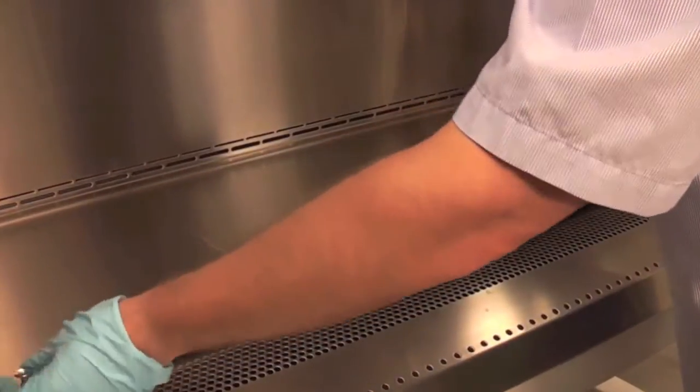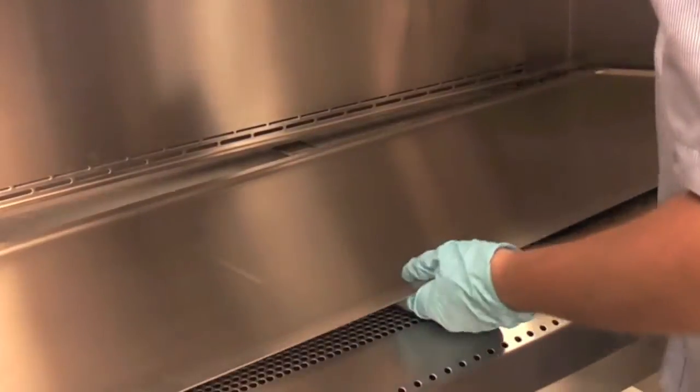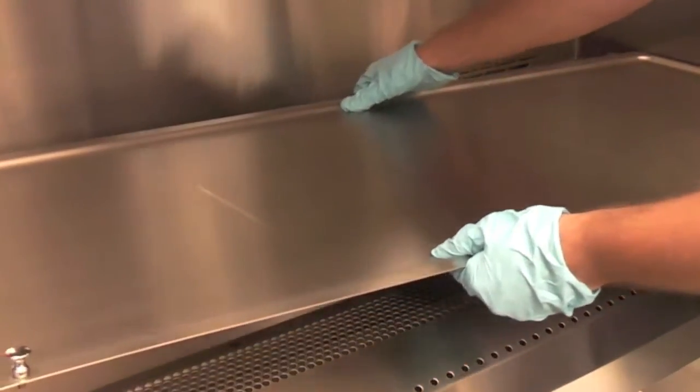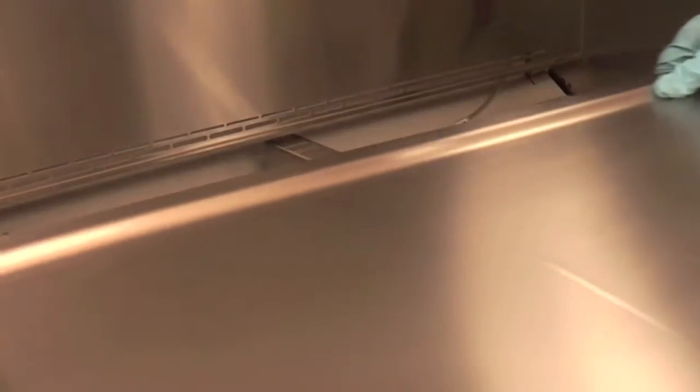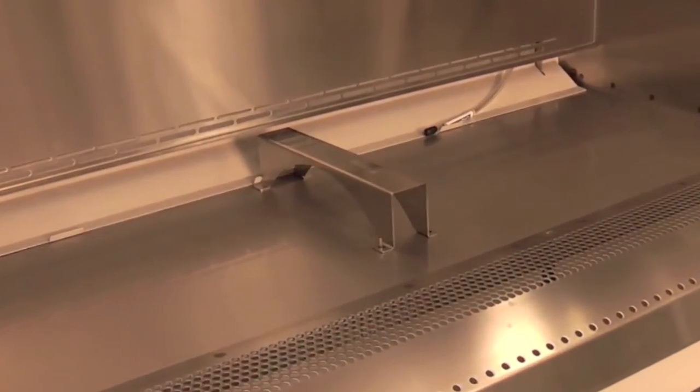First, remove the stainless steel work surface with the knob handles at each end. Lift and pull towards you. Then, lift and remove the support rail that holds the towel catch in place. Do not remove it from the cabinet's interior.